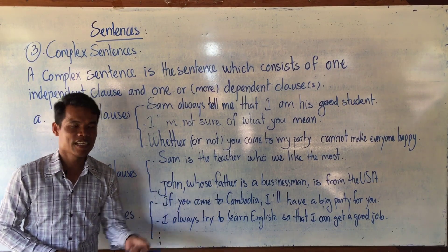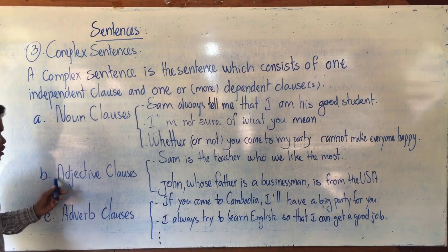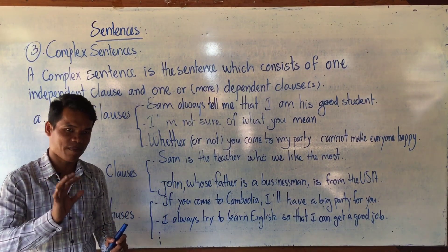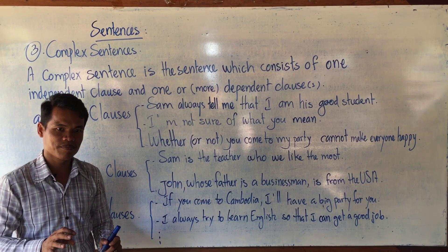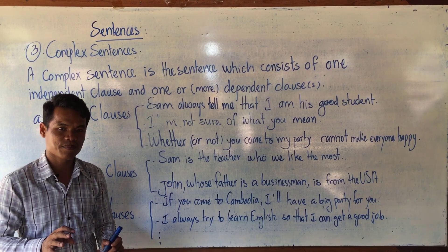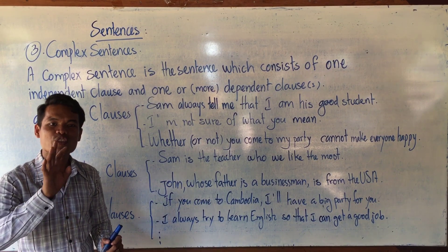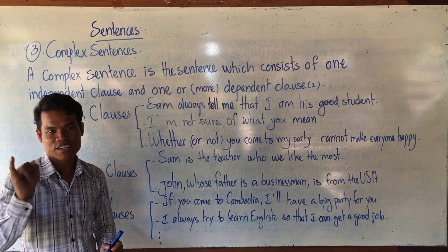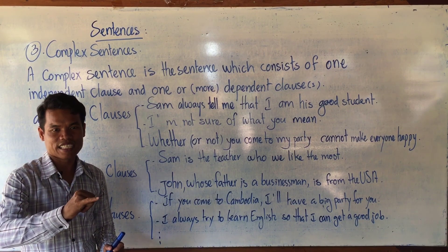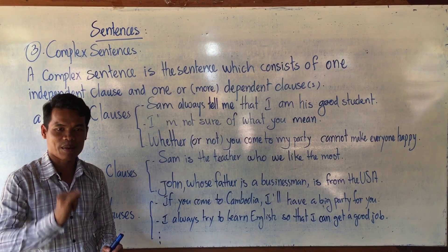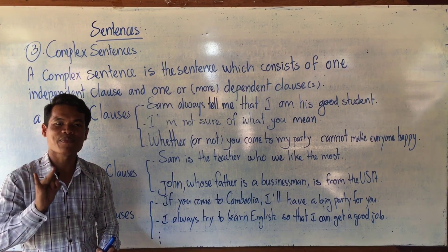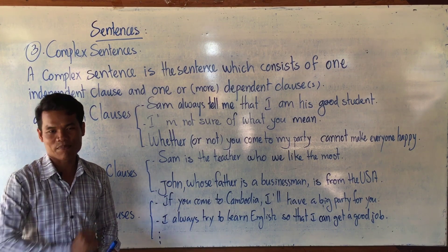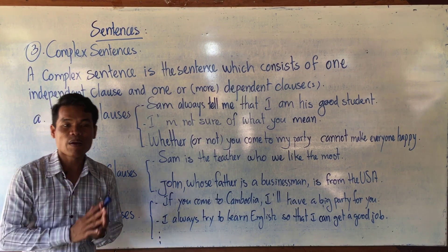How about adjective clauses? How many types of adjective clauses are there? There are two types of adjective clauses: defining relative clauses, which have no comma, and non-defining relative clauses, which use a comma.